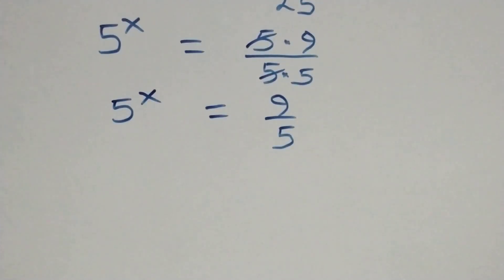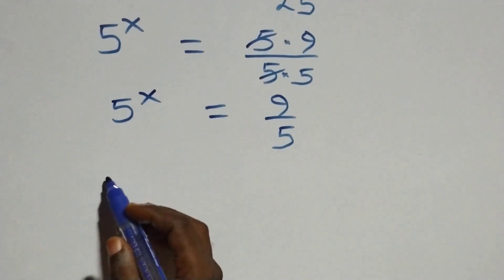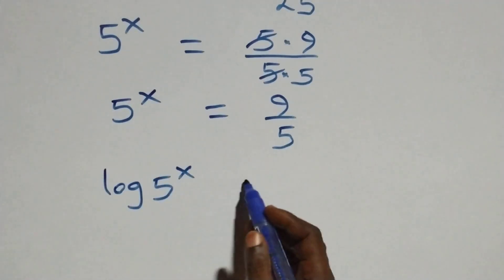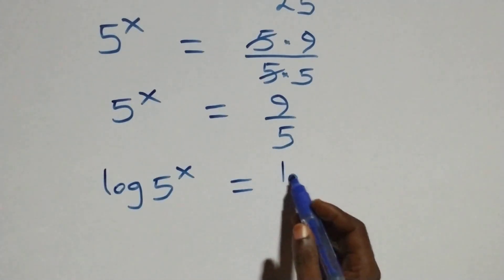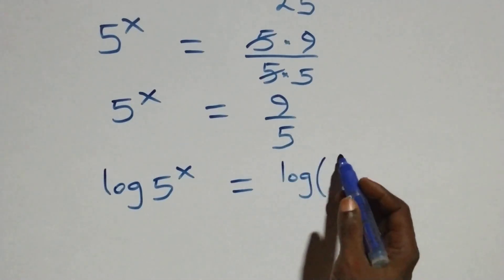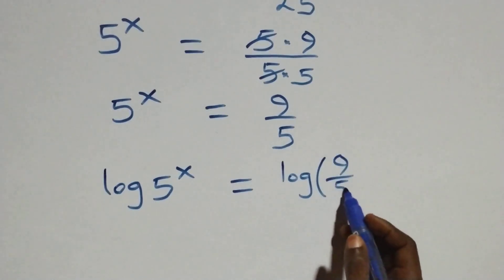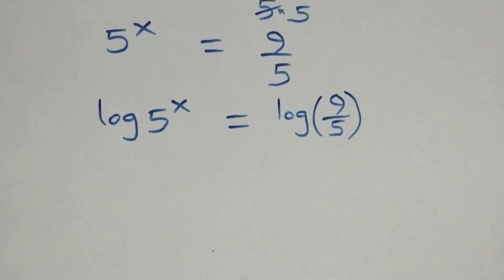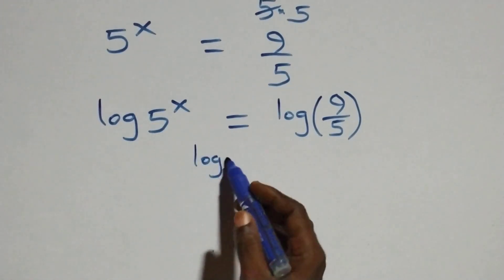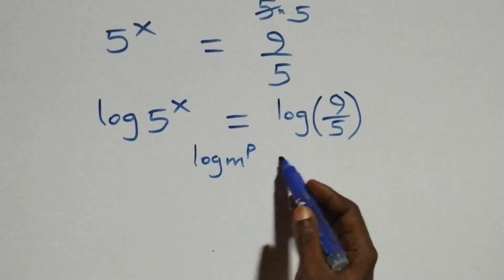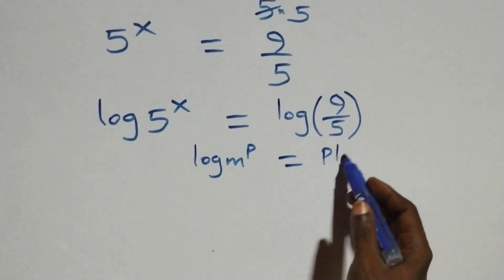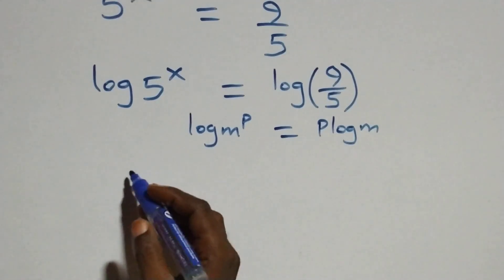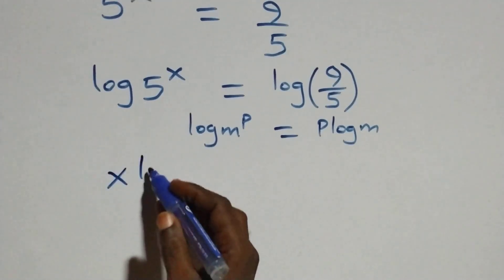The next step: we take the log on both sides, giving us log of 5 raised to power x equals log of 9 over 5. We apply the power rule of logarithms: log of m raised to power p is the same as p log m. This becomes x log 5 equals log of 9 over 5.